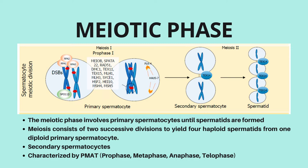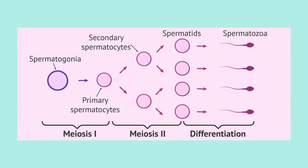These spermatids are haploid with 22X or 22Y chromosomes and undergo complete differentiation and morphogenesis, known as spermiogenesis. Spermatogonia undergoes meiosis I and becomes the primary spermatocyte, then undergoes meiosis II. The secondary spermatocytes become spermatids during meiosis II, and then spermatids become spermatozoa during the differentiation phase.